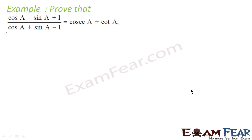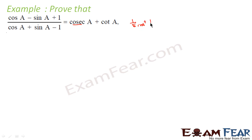Here we have to prove that (cos A - sin A + 1) / (cos A + sin A - 1) is equal to cosec A plus cot A. If you observe this question, cosec A is nothing but 1 by sin A, and cot A is nothing but cos A by sin A.